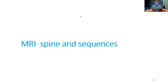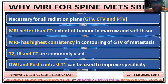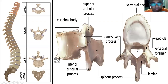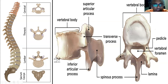Now MRI spine sequences. Why is MRI needed for spine? For proper delineation of GTV, CTV, PTV, extent of tumor, marrow and soft tissue involvement. MRI has the highest consistency in contouring the GTV of spine metastasis. T2 and STIR are commonly used. Diffusion-weighted imaging can also be requested. Post-contrast can improve specificity. The normal anatomy of the spine includes the vertebral body, pedicle, transverse process, superior articular facet, lamina, spinous process, and spinal canal.